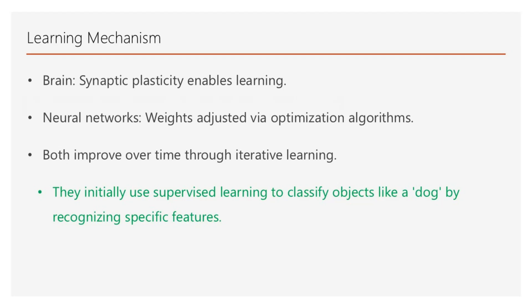In both cases, supervised learning is used in the beginning to teach both humans and neural networks that these characteristics belong to the dog class, and then both systems improve with practice over time.